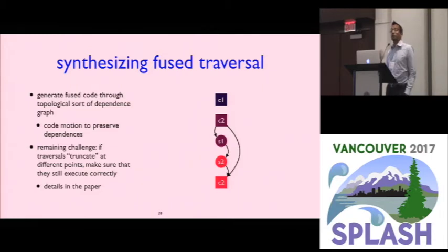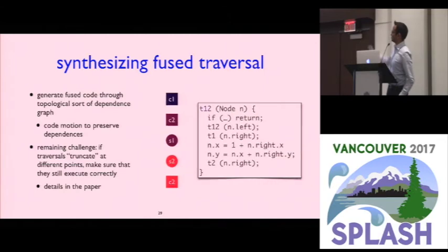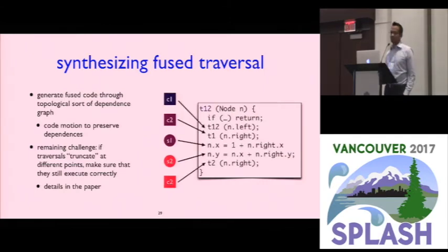So in particular, if you take that topological sort, what we came up with, you can directly match it up to the correctly fused code. Right? I make the merged call to T12 on n.left, and then I make different calls to n.right. There's a bit more of a challenge here about what happens if these traversals truncate at different times. If they return early, there's a lot of details about how we get that right. I would refer you to the paper.